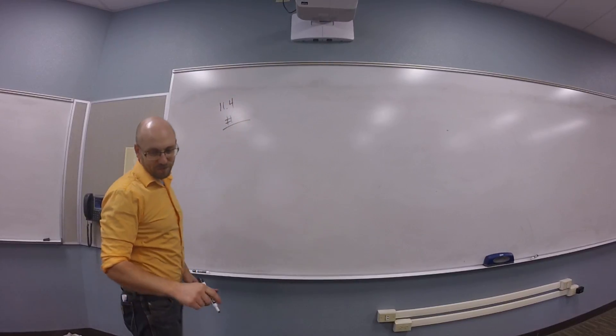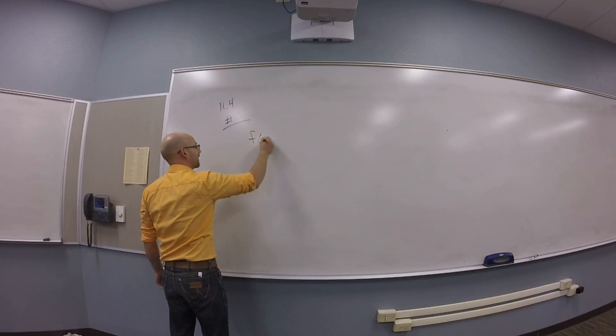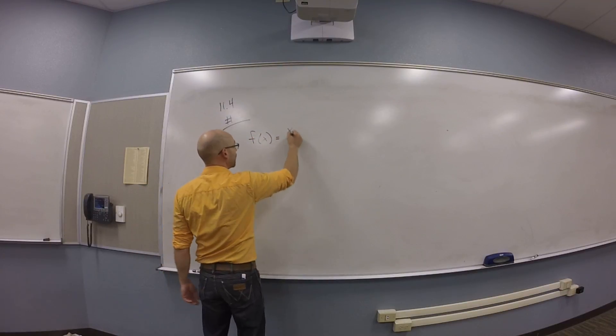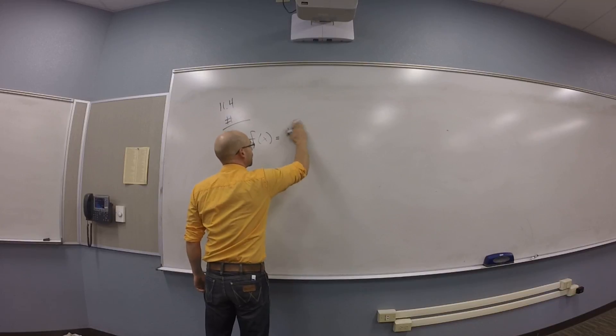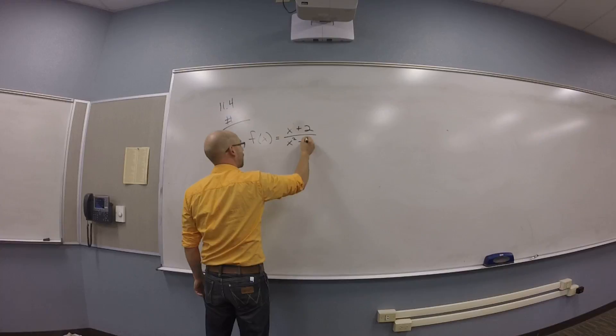Okay, so for 11.4, number one, I have a function that's f of x is x plus 2. That's not x plus 2. That's x plus 2 over x squared minus 1.